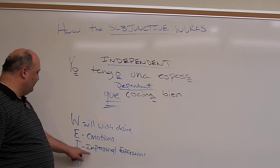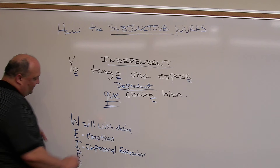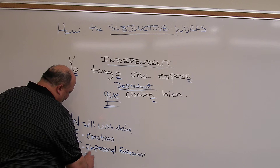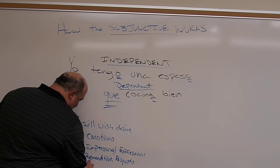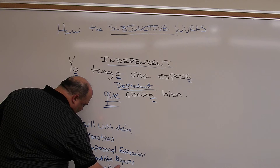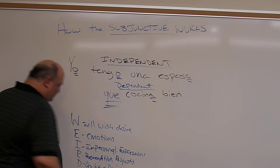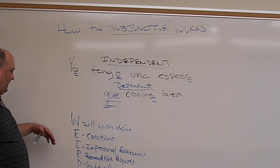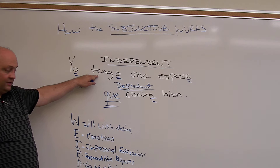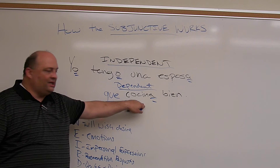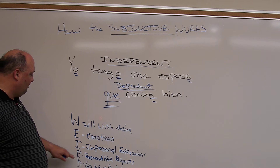The dependent clause doesn't like impersonal expressions that raise doubt or certainty, recommendations, requests, doubt or denial, and ojalá. Ojalá is a word that means 'I wish' — literally 'would to God,' it comes from Arabic. You don't have to use 'que' with ojalá — that's the one rule. All of these, if the first clause expresses a will, wish, desire, emotion, impersonal expression, recommendation, request, doubt, denial, or ojalá — followed by 'que' — the dependent clause must be in the subjunctive.